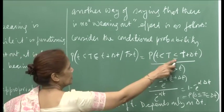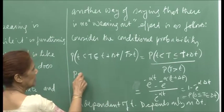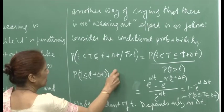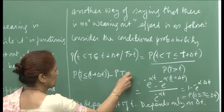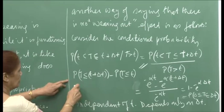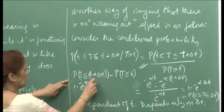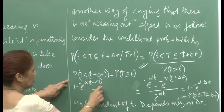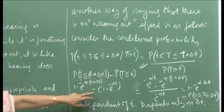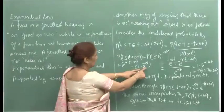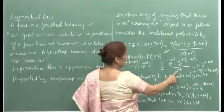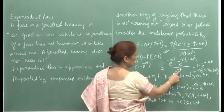This can be seen immediately as the probability T less than or equal to t plus delta T minus probability T less than or equal to t, divided by the survival probability. This is 1 minus e^(−αt) minus 1 minus e^(−α(t + delta T)), all divided by e^(−αt). The ones cancel out and you are left with e^(−αt) minus e^(−α(t + delta T)) divided by e^(−αt).